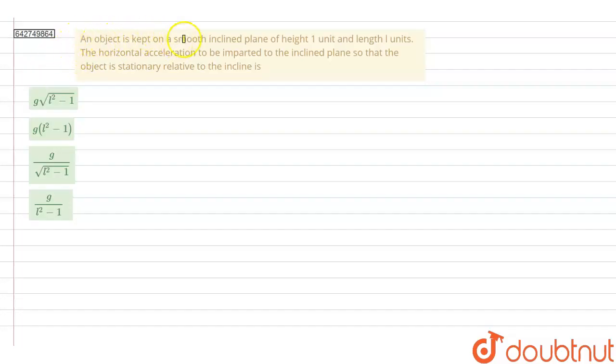An object is kept on a smooth inclined plane of height one unit and length l units. The horizontal acceleration to be imparted to the inclined plane so that the object is stationary relative to the incline is...